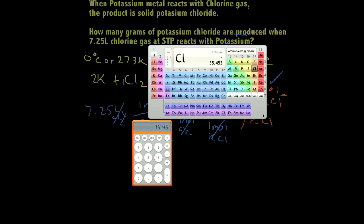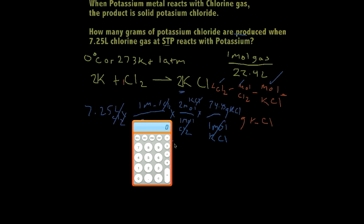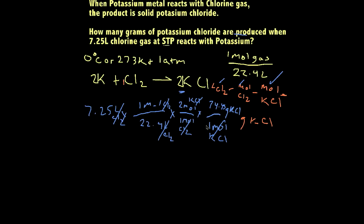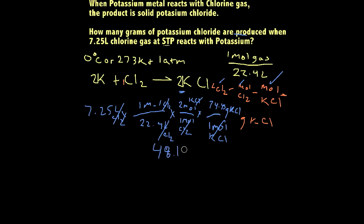So let's just grab our calculator here again, and solve for this problem. Alright, let me move this down, or up rather, so you can see it. We've got 7.25 times 1 divided by 22.4 times 2 moles divided by 1 times 74.45 divided by 1. I'm just doing the divided by 1 so that you get the idea of dimensional analysis here. You don't actually have to do these. I'm just doing it to remain consistent. So that's 48.19. So we have 48.19 grams of potassium chloride.